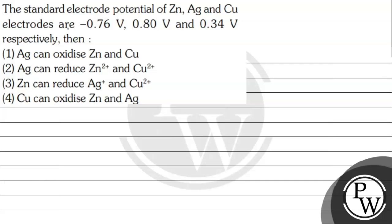Let's read this question. The question says standard electrode potential of Zinc, Silver, and Copper electrodes are minus 0.76 volt, 0.80 volt, and 0.34 volt respectively. Option one: Silver can oxidize Zinc and Copper. Option two: Silver can reduce Zinc 2+ and Copper 2+. Option three: Zinc can reduce Ag+ and Copper 2+. Option four: Copper can oxidize Zinc and Silver. The key concept for this question is standard reduction potential.